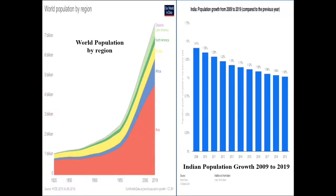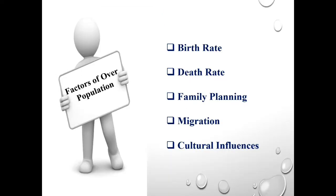In this slide, the left graph is presenting the world population by region, and the right one is the population growth of India from 2009 to 2019. Increased birth rate, decrease of death rate, no proper family planning, migration, and other cultural influences are the factors of overpopulation.